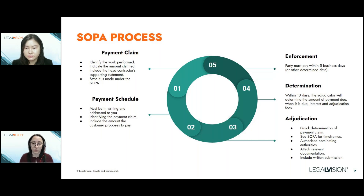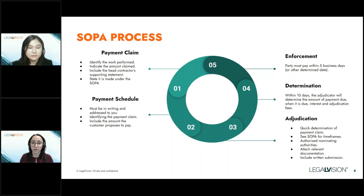Once all documents have been provided to the adjudicator, the next step is for the adjudicator to review everything and provide their determination. Generally the adjudicator provides a determination within 10 business days from the date on which they notify the parties that they accepted the adjudication application — there are limited situations in which this can be extended. The adjudicator can determine the amount of the progress payment the respondent must pay, the date on which that amount became payable, any rate of interest payable, and the proportion of the adjudicator's fees payable by each party. This process is entirely in writing, usually provided as a summary document with orders and reasons.